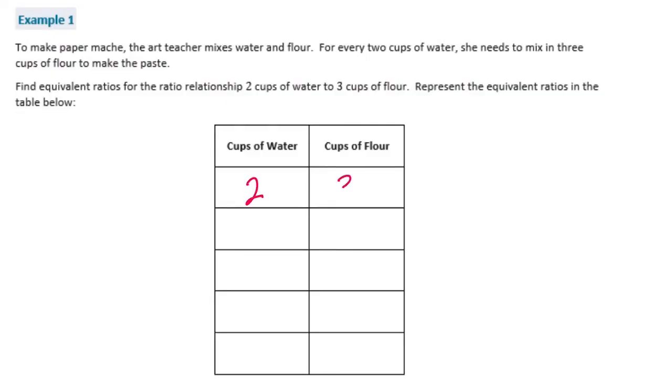So we know for every 2 cups of water, there are 3 cups of flour. Now, if we want to make equivalent ratios, all we need to do is pick a number and multiply it by both 2 and 3. So I'm going to start with multiplying by 2. So if I multiply 2 by 2, I get 4. If I multiply 3 by 2, I get 6. So an equivalent ratio would be 4 to 6.